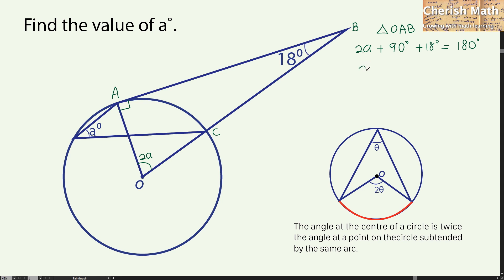And now we get the value 2a is 72 degrees, and the value of a alone will be 36 degrees.